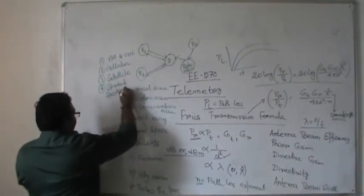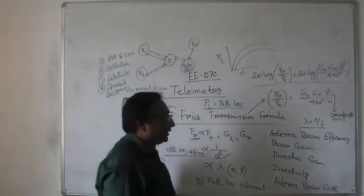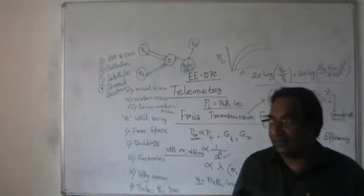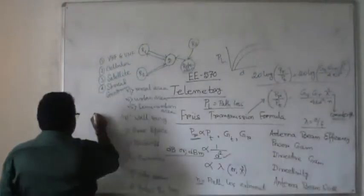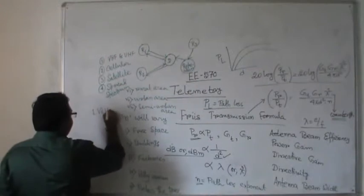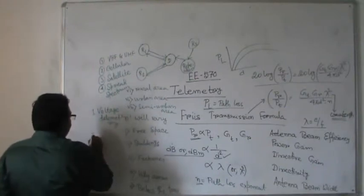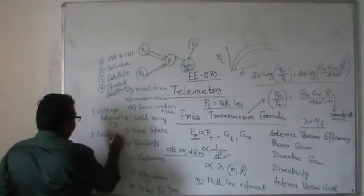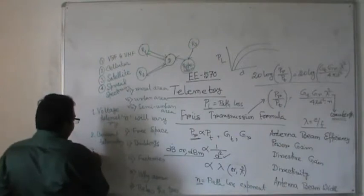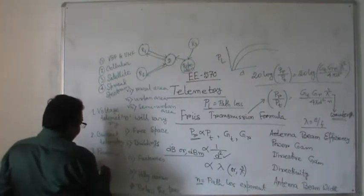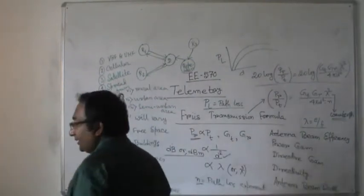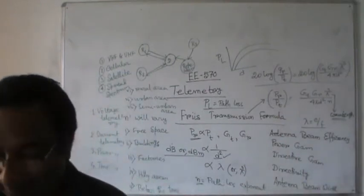All these types come under certain categories: there will be voltage telemetry — where we have to see the input and output voltage associated with the system; second is current telemetry; third is power telemetry; fourth is time telemetry. These are the things which are very important in nature.